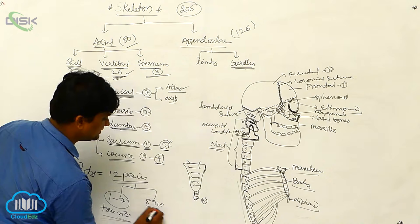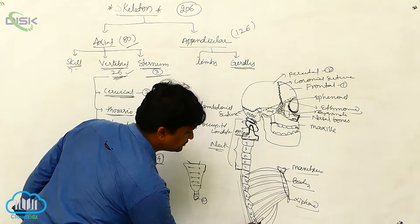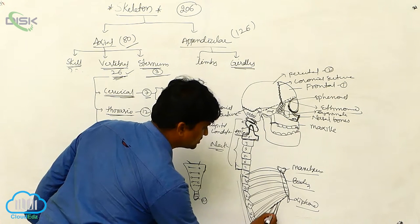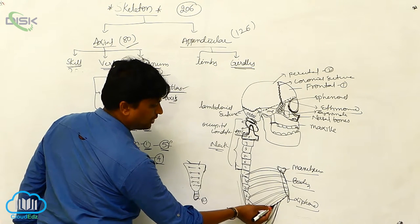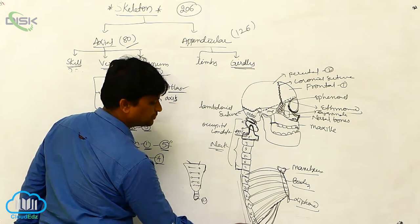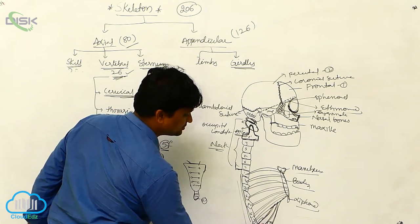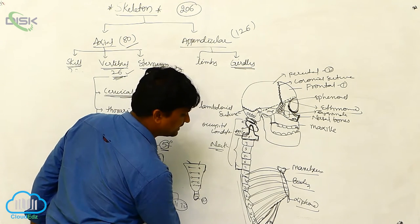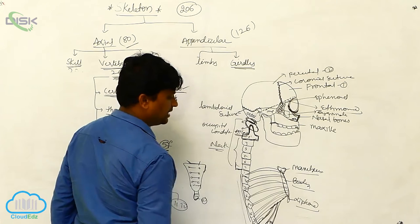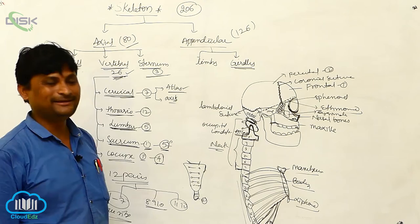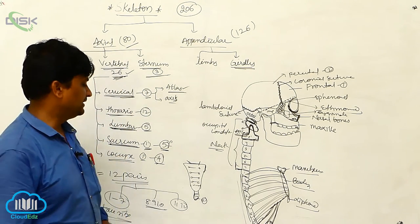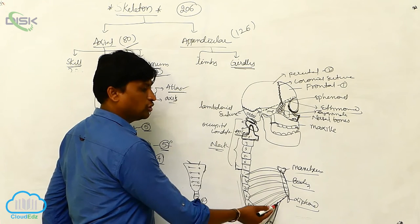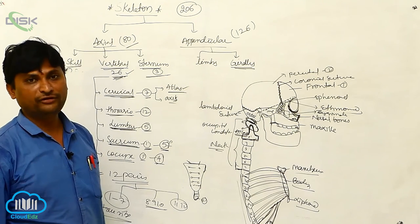Ribs eight, nine, and ten are attached to the seventh rib via a cartilaginous joint called the vertebrochondral joint — these are called vertebrochondral ribs. Ribs eleven and twelve are free at their ends and move freely in the thoracic area; these are called floating ribs or free ribs. So the three rib classifications are: true ribs, vertebrochondral ribs, and floating ribs.